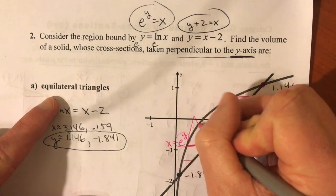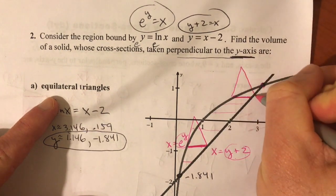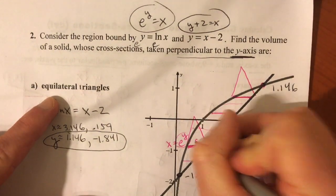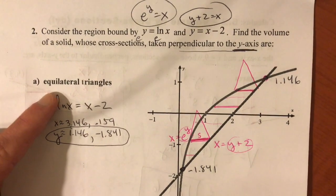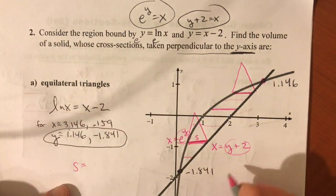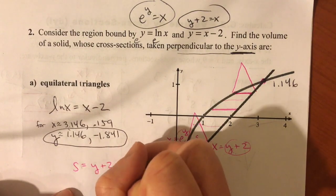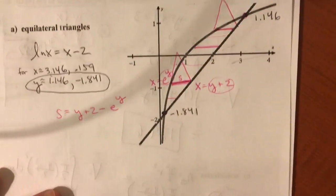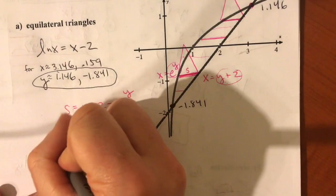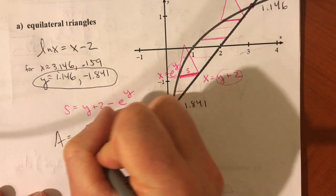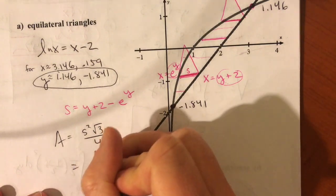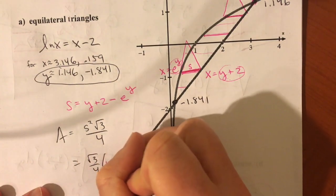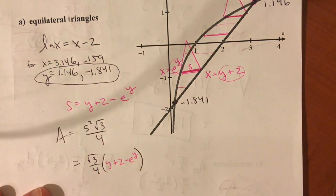And what kind of cross section are we doing? Equilateral triangle. If you like to try to sketch the 3D thing, I don't blame you. It's pretty cool. But I'll just get a little lazy here and say, look, each one of these little sections, these horizontal segments, that is the side of the equilateral triangle. So each side is going to be the right boundary minus the left boundary, y plus 2 minus e to the y. And the area of any equilateral triangle is s squared root 3 over 4. Or in this case, root 3 over 4 times that s, y plus 2 minus e to the y squared.